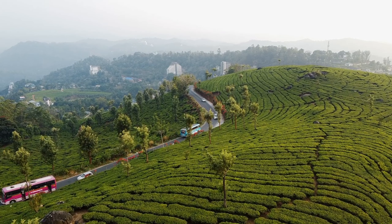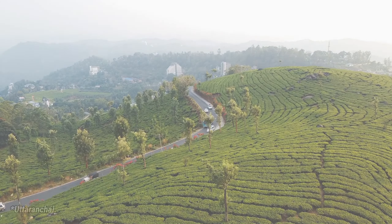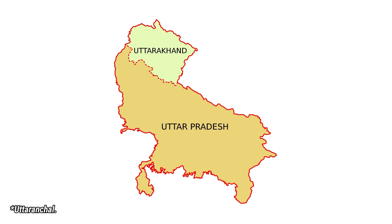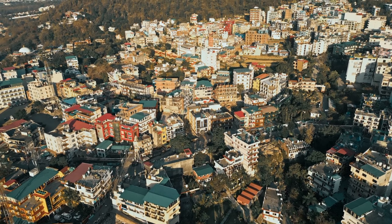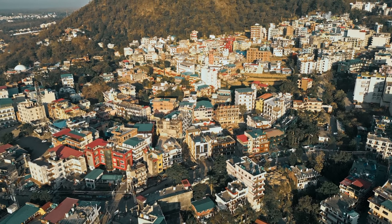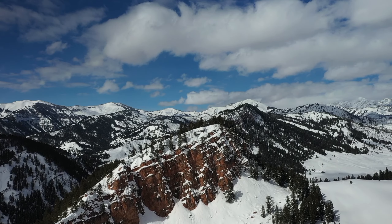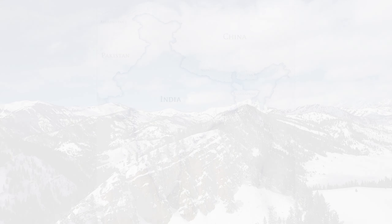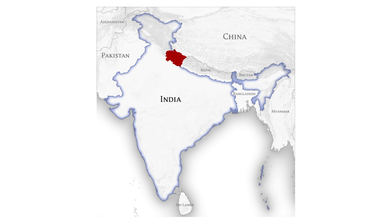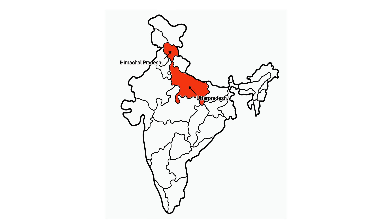The region today known as Uttarakhand was earlier known as Uttaranchal and was a part of the state of Uttar Pradesh, before it was carved out of Uttar Pradesh on November 9, 2000. The state name was changed in 2007 and was renamed Uttarakhand. One of the 20 landlocked states in India, the state borders the Tibet Autonomous Region of China to the north and Nepal to the east. It also shares its borders with two other Indian states, which are Uttar Pradesh and Himachal Pradesh.